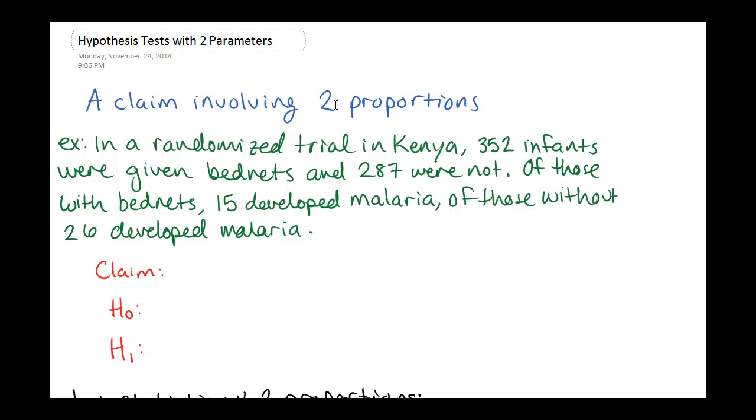In this next section we're looking at using hypothesis tests to compare two different parameters. For this first example we've got a claim involving two different proportions. So we have two samples or two populations that we're looking at and we're comparing the proportions between the two.